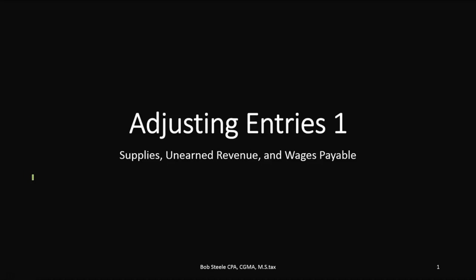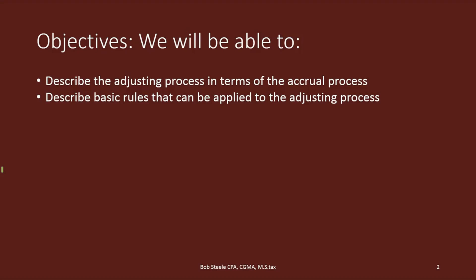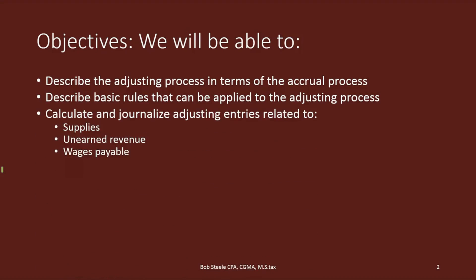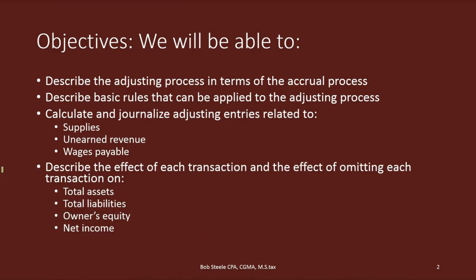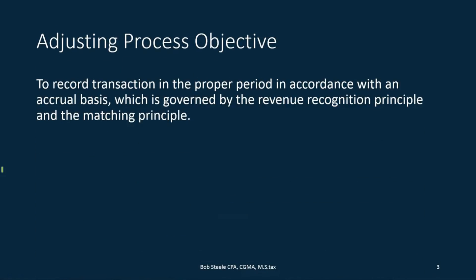In this lecture we will talk about the adjusting entries process. We will describe the adjusting process in terms of the accrual process, describe basic rules that can be applied to the adjusting process, and calculate and journalize adjusting entries related to supplies, unearned revenue, and wages payable. Then we want to describe the effect of each transaction and the effect of omitting each transaction on total assets, total liabilities, owner's equity, and net income. The adjusting process records transactions in the proper period in accordance with an accrual basis, governed by the revenue recognition principle and the matching principle.